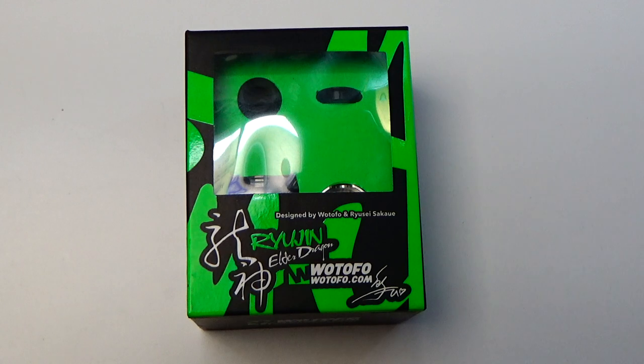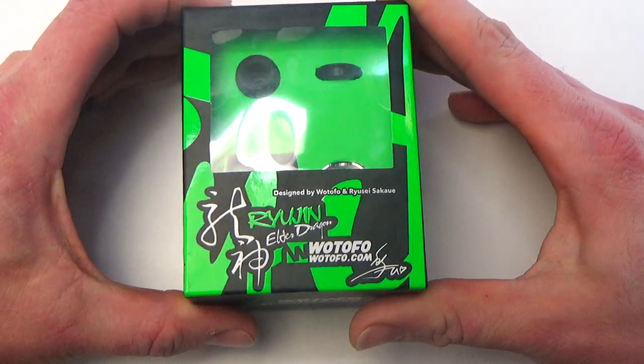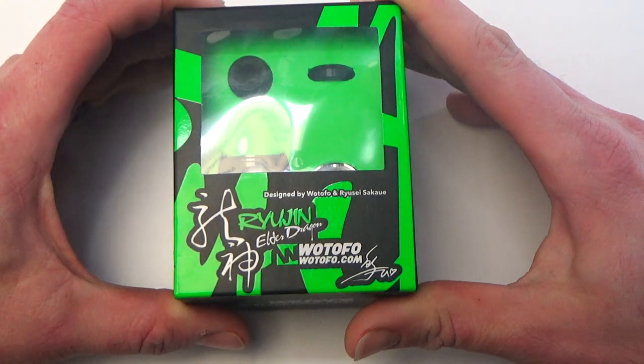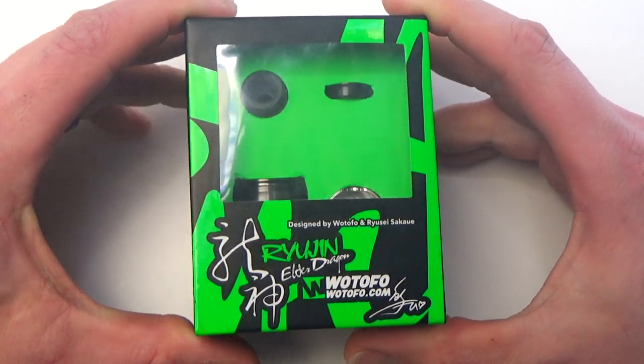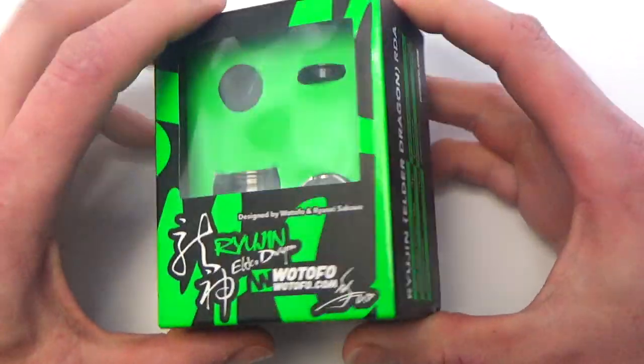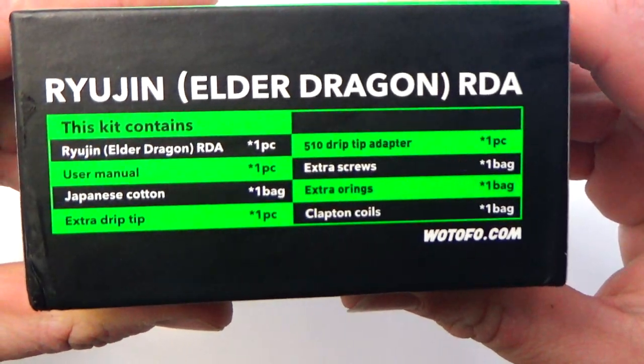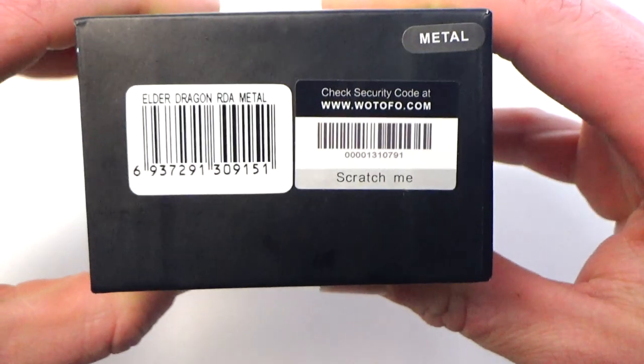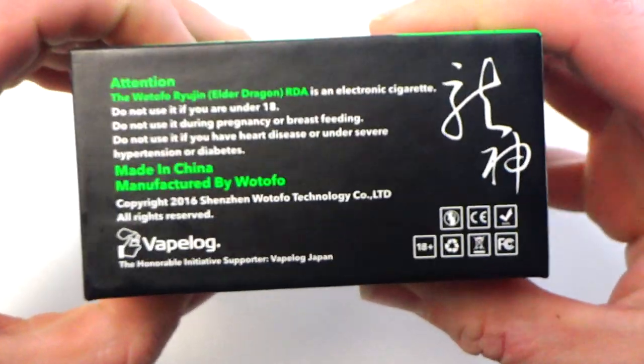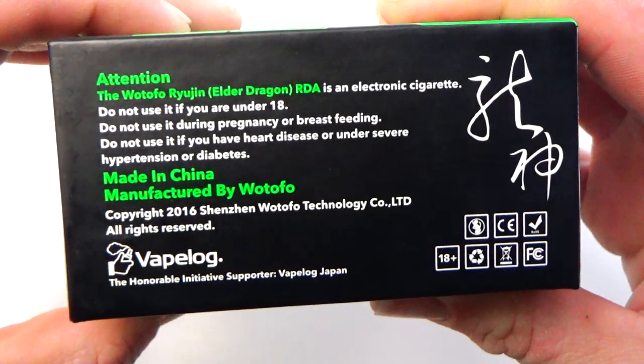Let's crack on. All right then. What's nothing about? This is the box that your Watofu Ryujin Elder Dragon, I keep wanting to say Elder Flower, Elder Dragon RDA will come in. I like the Watofu boxes. It shows you everything on the side that is included. It's all very nicely displayed. Scratchy scratch. The color of your device. A bit of information about Watofu and all the warnings and whatnot.